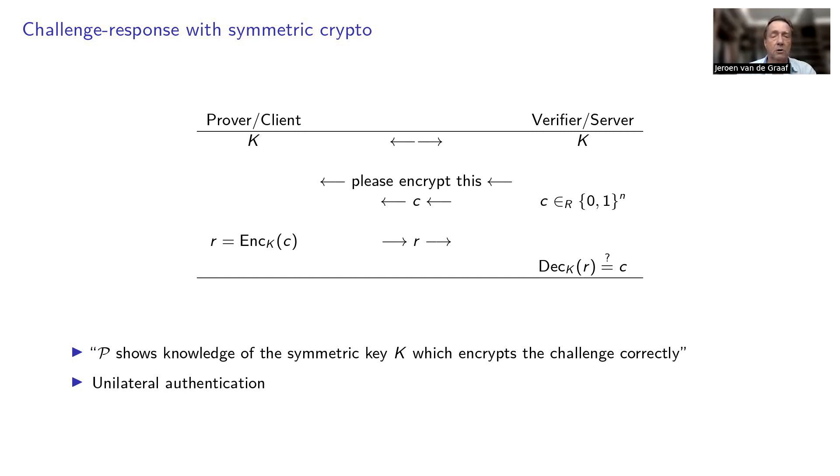the prover shows knowledge of a symmetric key, but this key is not sent over the internet. Now this is a form of unilateral authentication: the server is verifying the client, but it's not the other way around.